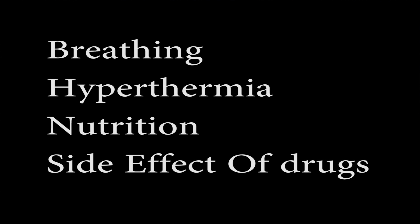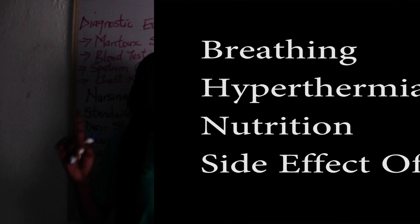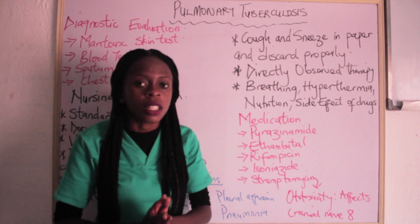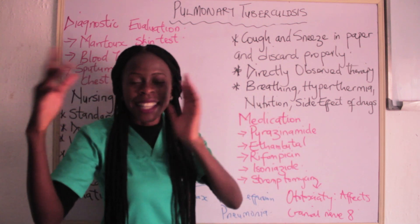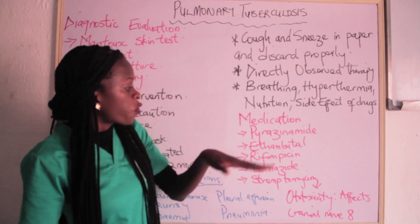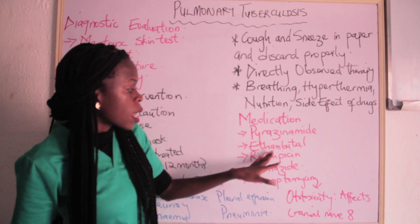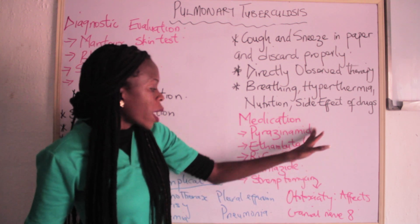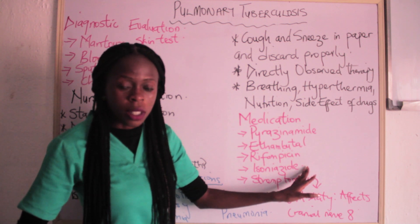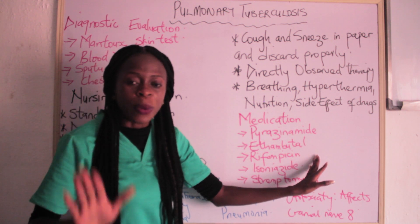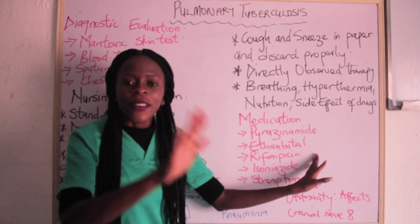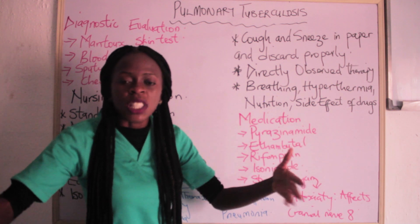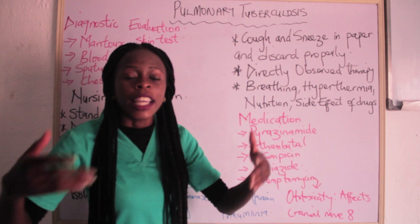The drugs used in the management of pulmonary tuberculosis are divided into first-line and second-line drugs. The first-line drugs are pyrazinamide, ethambutol, rifampicin, and isoniazid. These four drugs are first-line agents used in the treatment of pulmonary tuberculosis. They have bacteriostatic and bactericidal effects, helping to fight the bacteria and inhibit the growth of proteins in the bacteria.